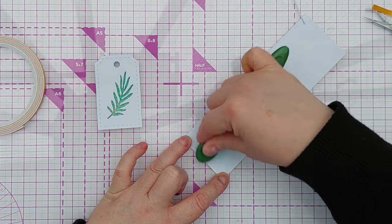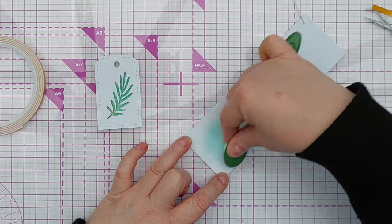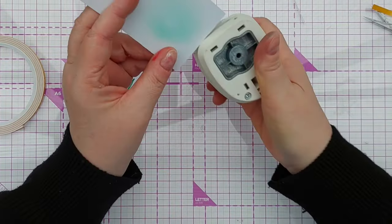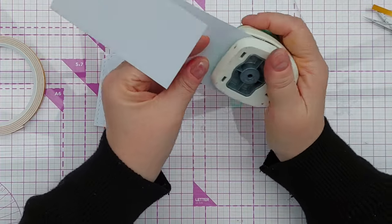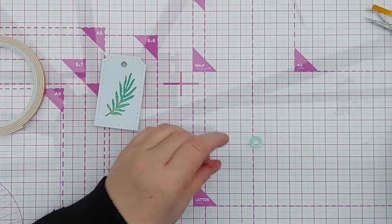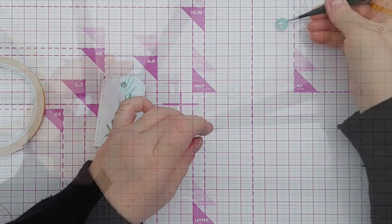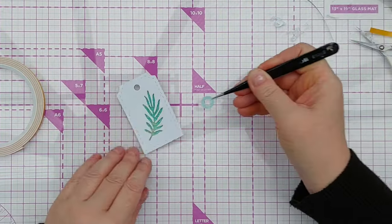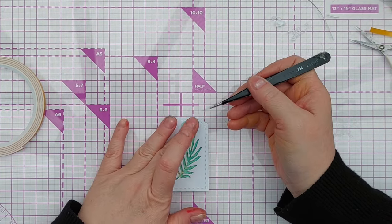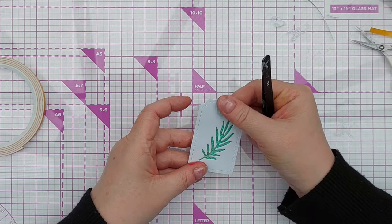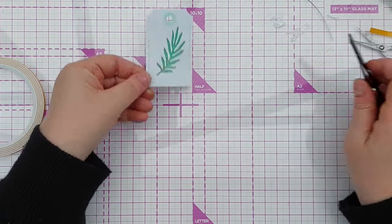I want a light green hole reinforcer on my tag, so I've got a punch here that should make me a little hole reinforcer. I'm going to add a bit of glue to the back of that and pop it on there, and now my front tag is finished.